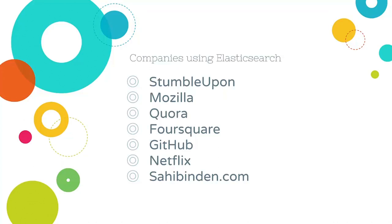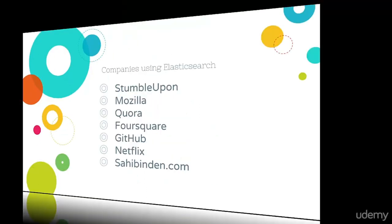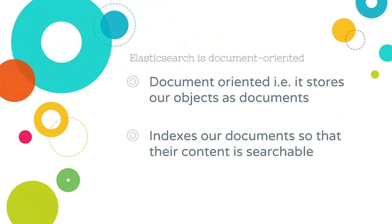Sahibinden.com, which is the largest online classifieds and e-commerce platform in Turkey — the company I work in — also uses Elasticsearch. Elasticsearch is document-oriented; it stores our objects as they are. We don't split objects into several tables as we do with relational databases for the sake of normalization. Furthermore, Elasticsearch indexes our documents so that the content is searchable — that is the power of full-text search.